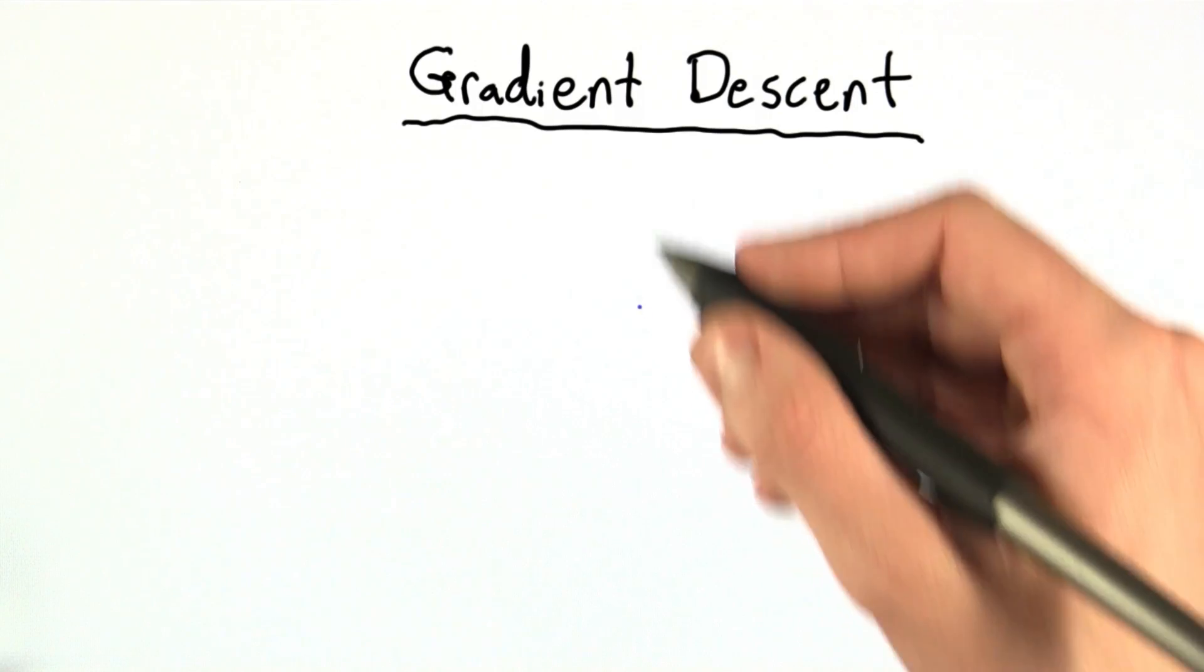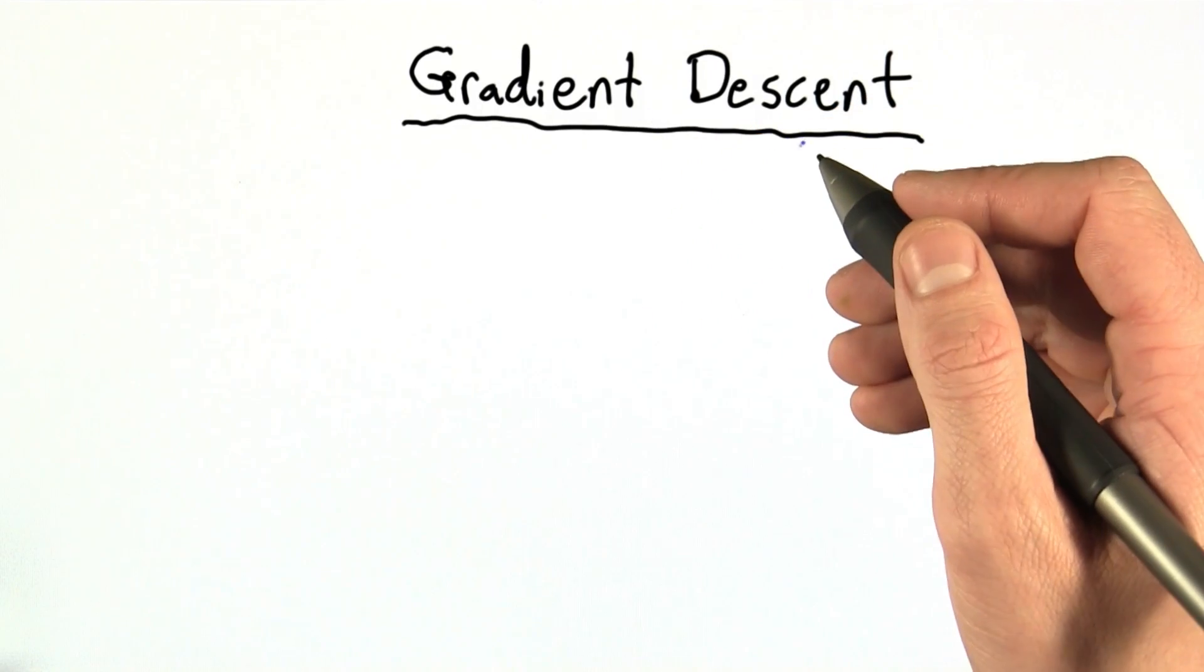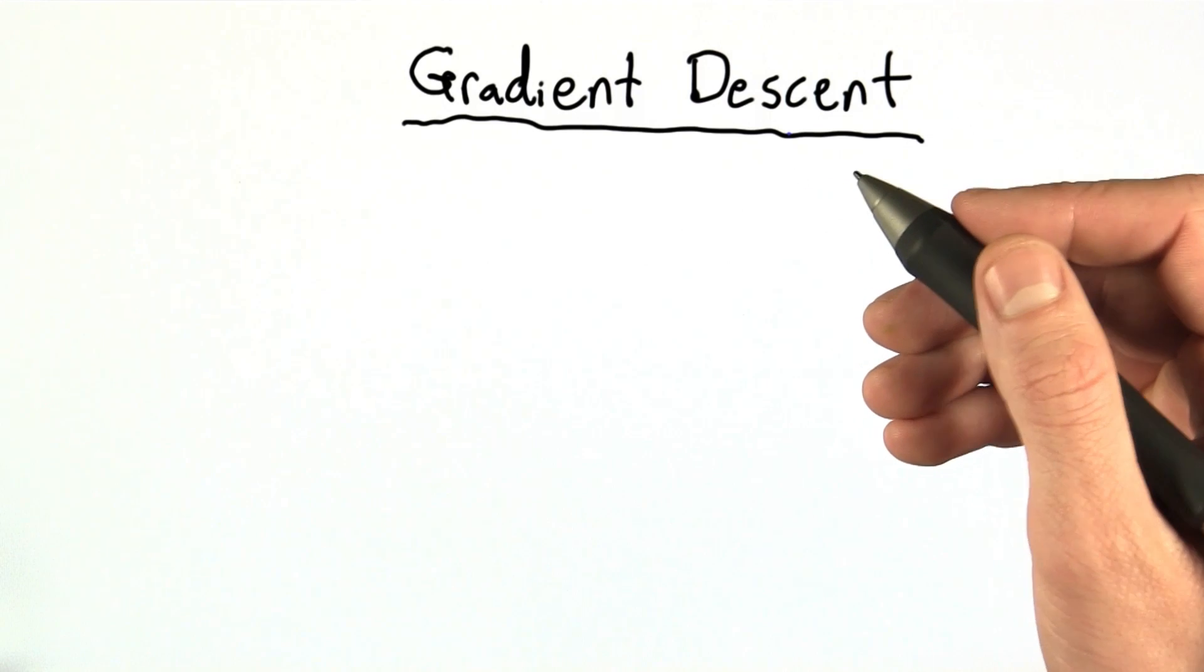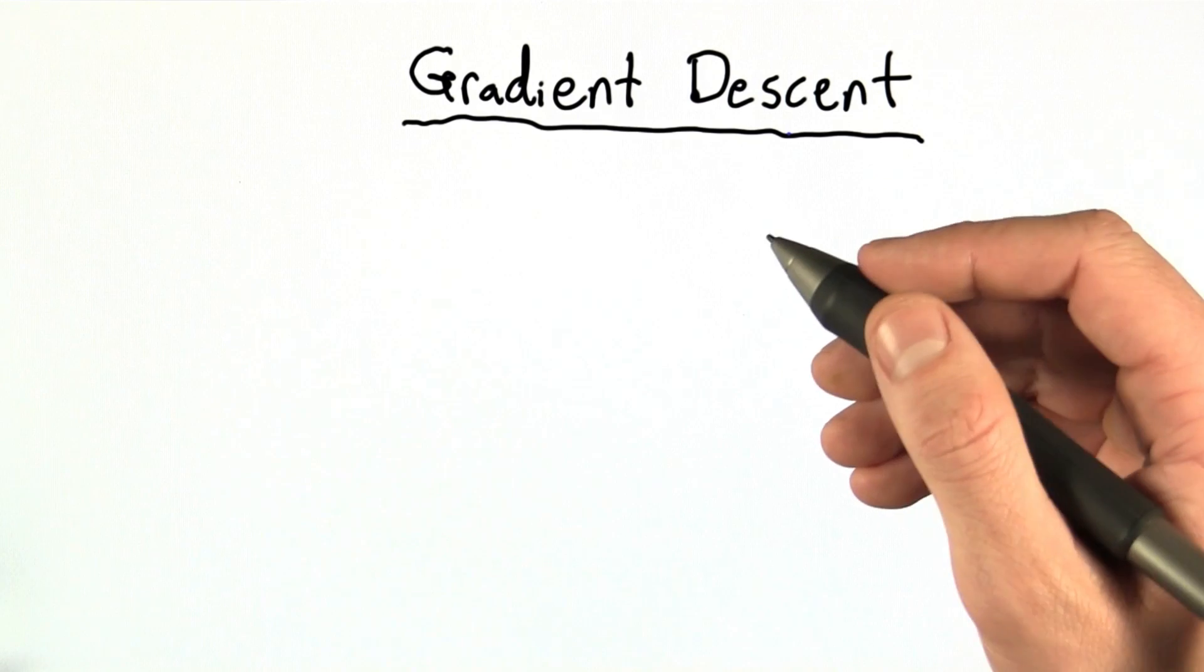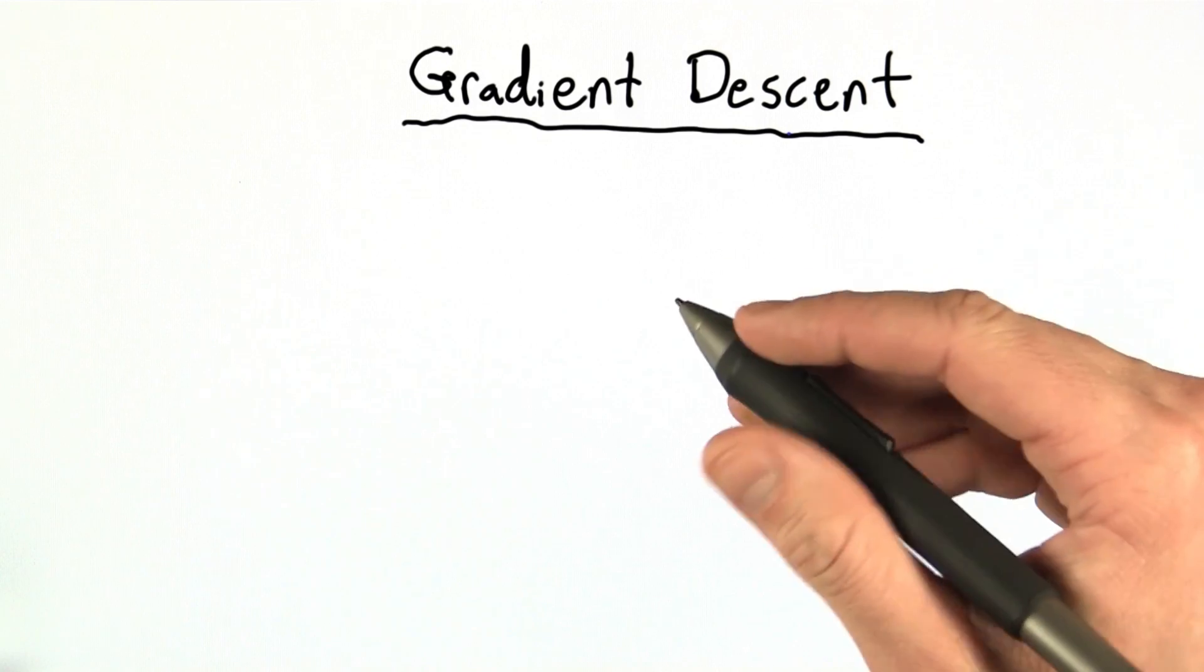So we saw a lot of confusion in the forums about what was going on with this gradient descent. The equations that were given to you were sort of presented as a black box, and I'd like to open up that black box and see what's going on inside.